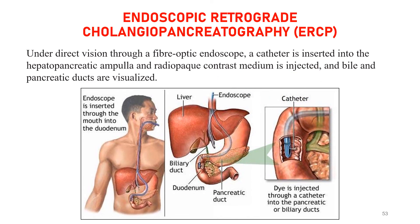ERCP — Endoscopic Retrograde Cholangiopancreatography — is a common and important investigative procedure. An endoscope is inserted through the mouth, through the oesophagus and stomach, into the second part of the duodenum. A catheter is then inserted into the biliary and pancreatic ducts through the endoscope, dye is injected, and the pathway is visualized to detect any obstruction or growth. This concludes the discussion of the gallbladder and the extrahepatic biliary apparatus with their applied aspects.